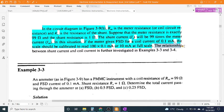The relationship between shunt current and coil current is further investigated in Examples 3-3 and 3-4.